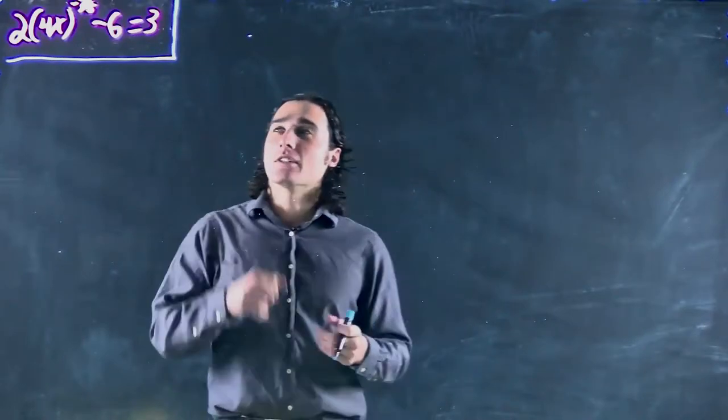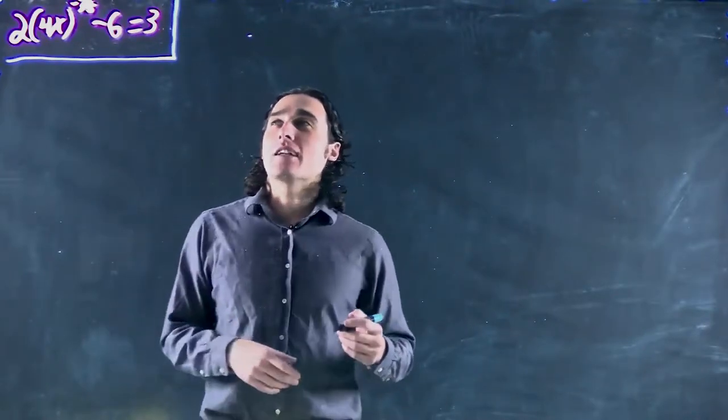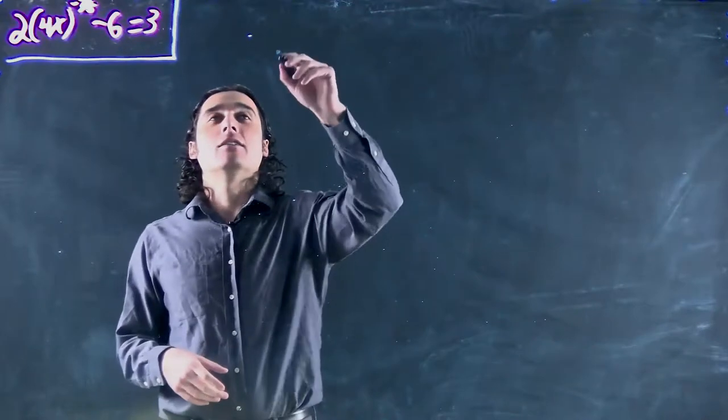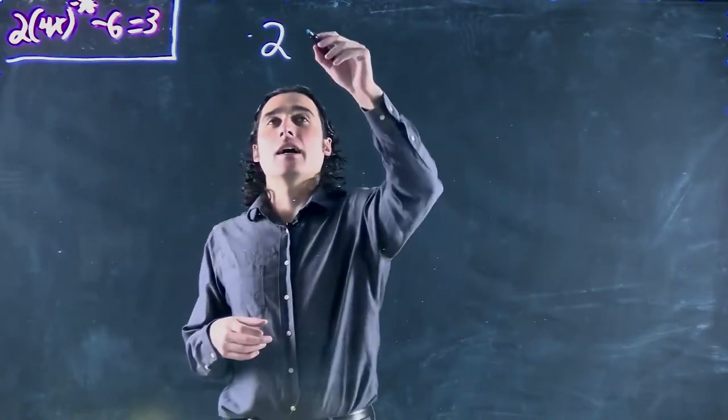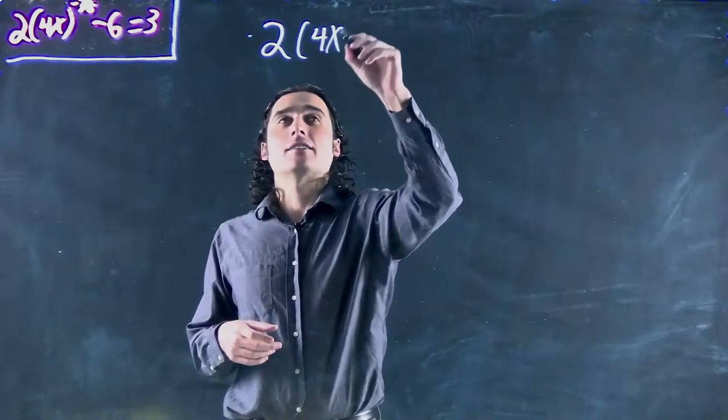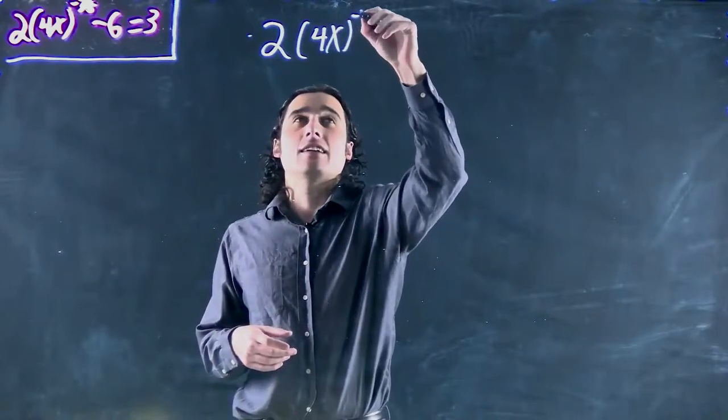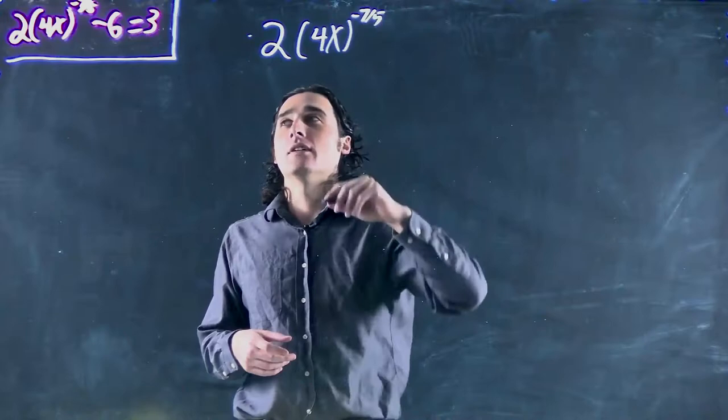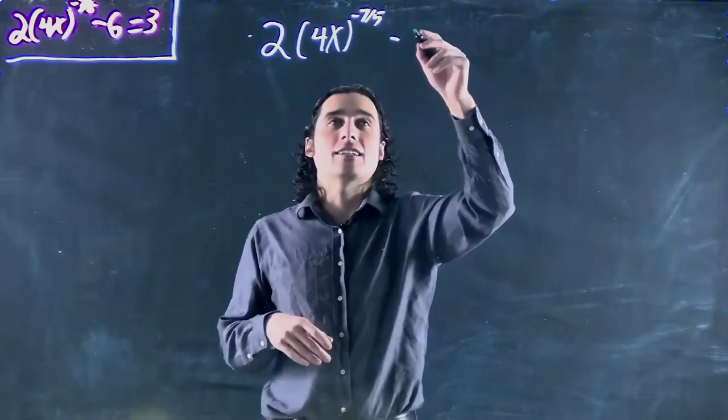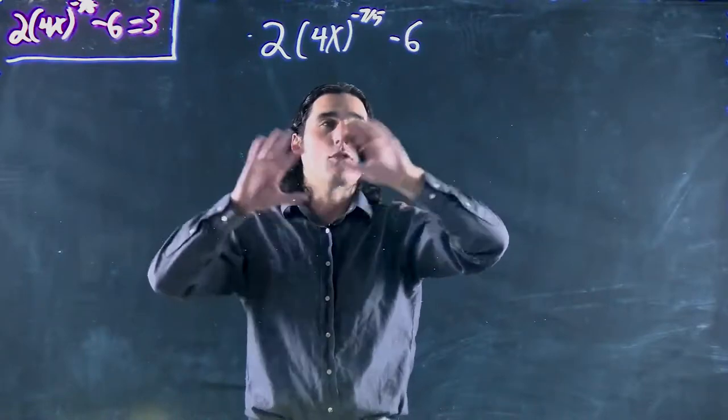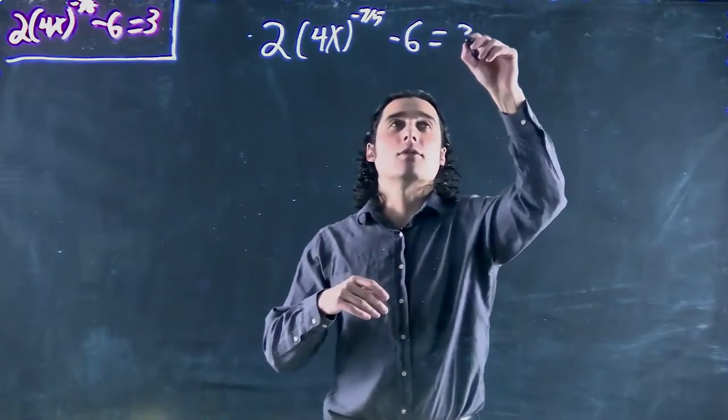Hi! We're still looking at power functions and we're getting a little more complicated. What we have now is 2 and that's being multiplied by 4x which is to the power of negative 7 over 5. That itself is subtracted by 6 and then that whole side is equal to 3.